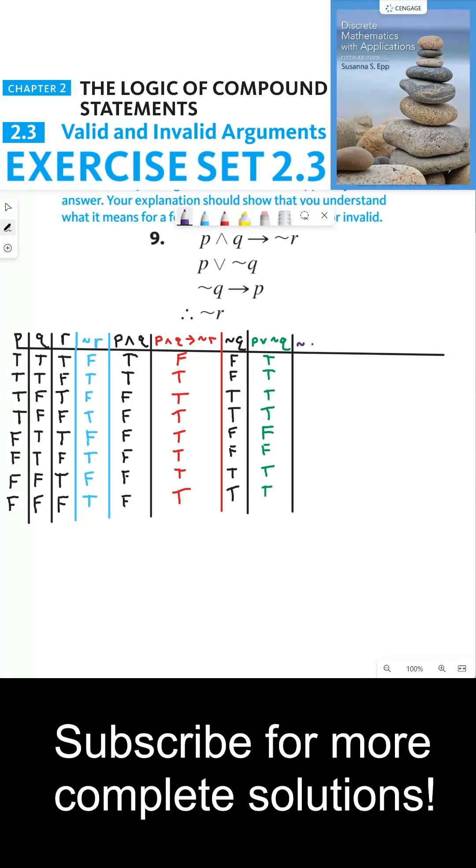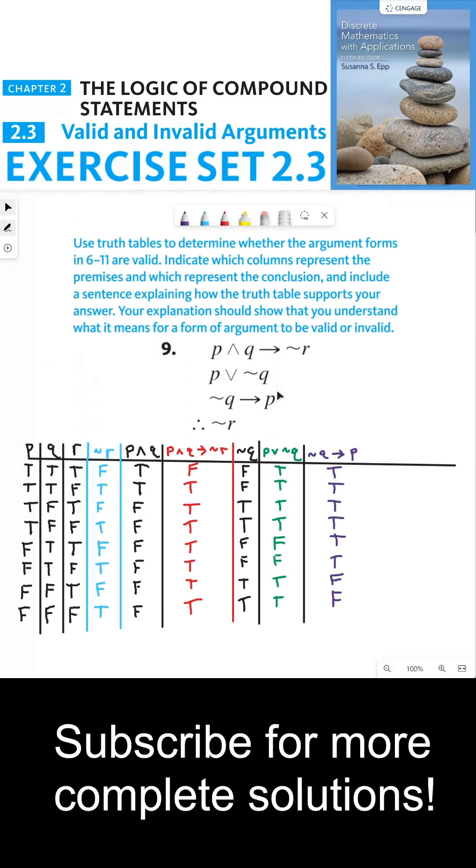And then we can look at not Q implies P. So this is only false precisely when not Q is true and P is false. And so that means the implication is false on the last two lines.